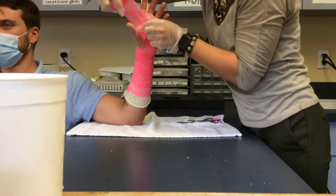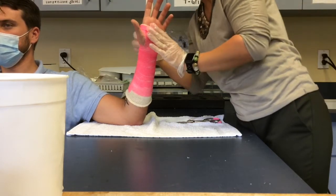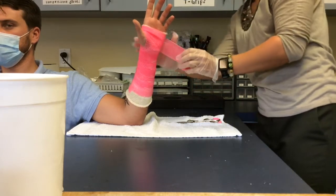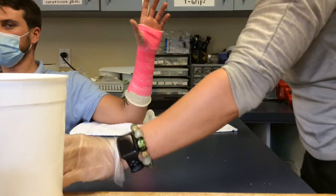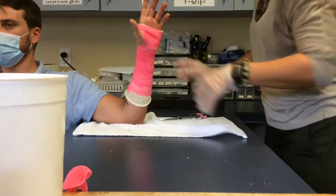Once you are done wrapping, you can cut the excess delta cast if you have any remaining. Make sure the end is secured.